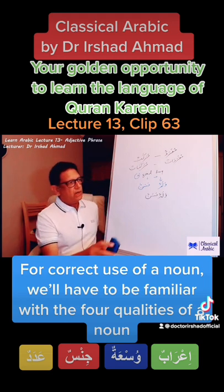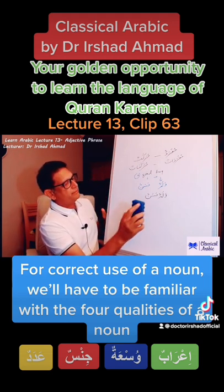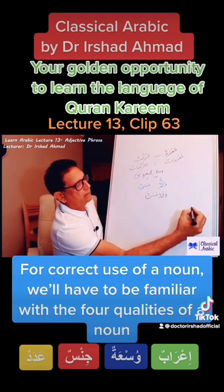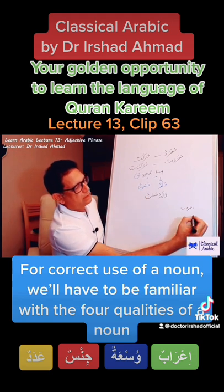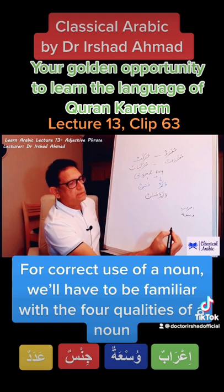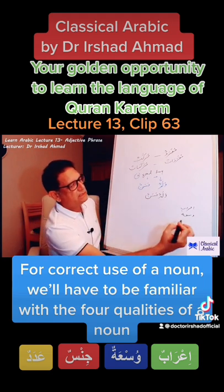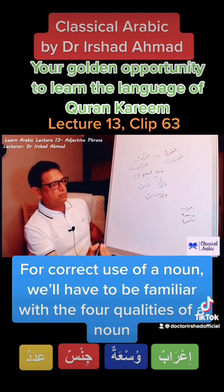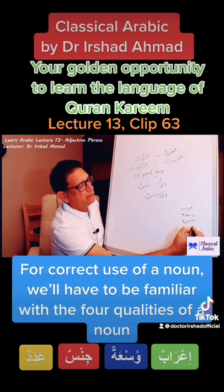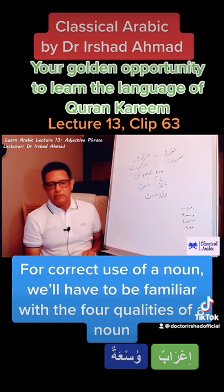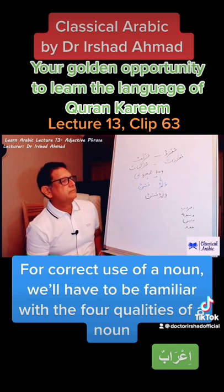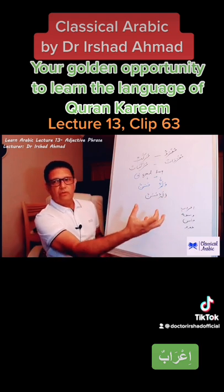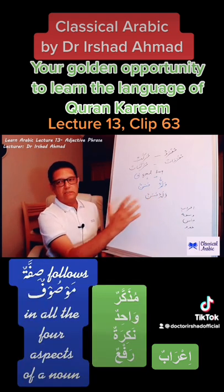So what are those four aspects? The four aspects are I'rab, and then we said Isa which is Marifa and Nakhira, which is definiteness. Then we said Jins — we will have to be familiar with that, whether it's Muzakkar or Moenness, and then Adad which is number, whether it is Wahid, Sasnya or Jamma. We will have to be familiar with these four attributes of a noun for correct use in a phrase or sentence.